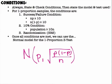Once all the conditions are met, we can use a normal model for a one proportion Z test. These are the same conditions used for a one proportion Z interval. The normal model has a mean of P, your population parameter, and a standard deviation of the square root of P times (1 − P) over n.